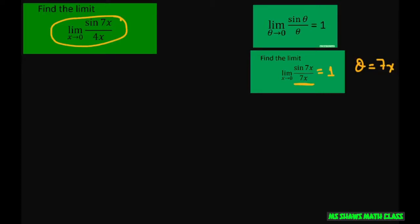So what I'm going to do is go ahead and write this as the limit as x approaches 0 sine of 7x divided by 4x. And I'm going to multiply the numerator and denominator by 7.